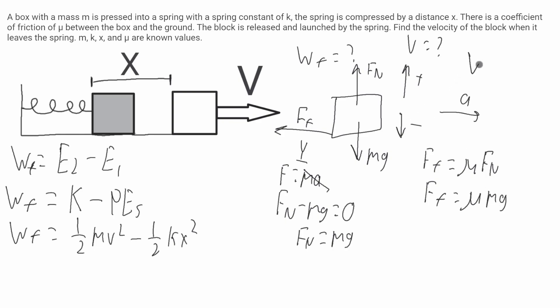Now, work is given as a force dot product its displacement. Now, what's this displacement? Well, if you look at this diagram, this spring will be compressed, and then it'll push this box along all the way through here, and it'll release it right here. So the distance this block will travel is the same as the distance that the spring is compressed. So the work of friction will be equal to the force of friction, the mu mg, dot product the displacement, which will just be x.